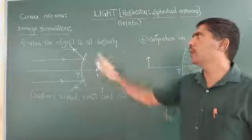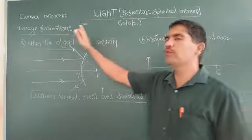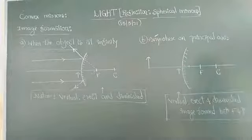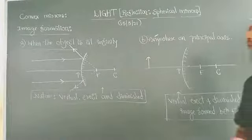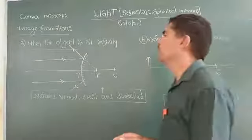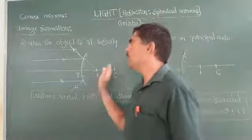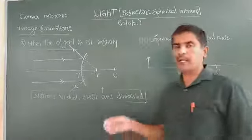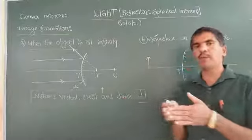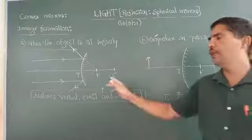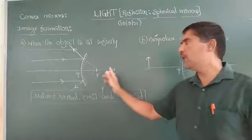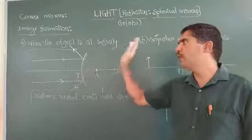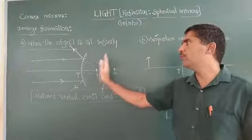This is for a convex mirror. In the case of a concave mirror, just recall — there, focus is a point on the principal axis where parallel light rays converge after reflection. But here, for a convex mirror, they appear to diverge from a point on the principal axis, and that is focus.